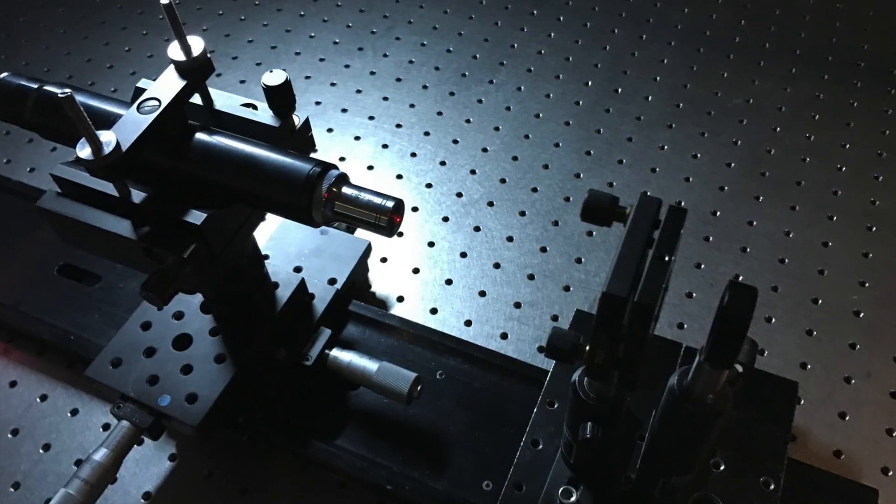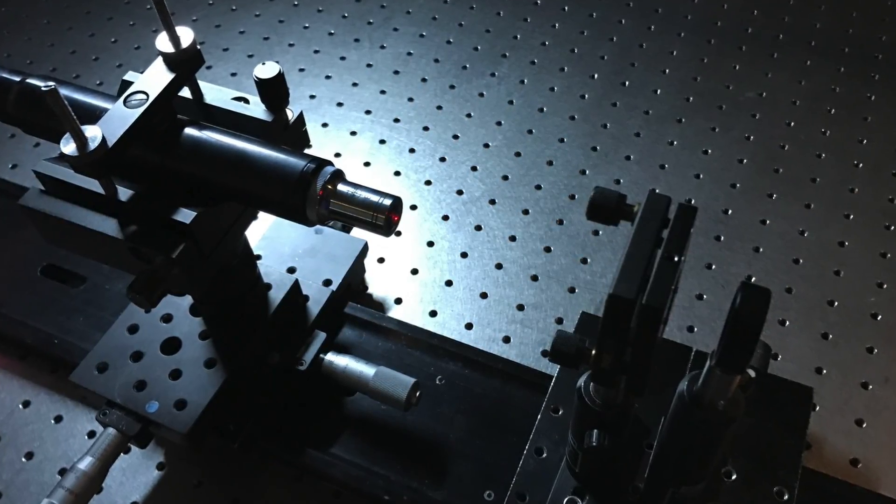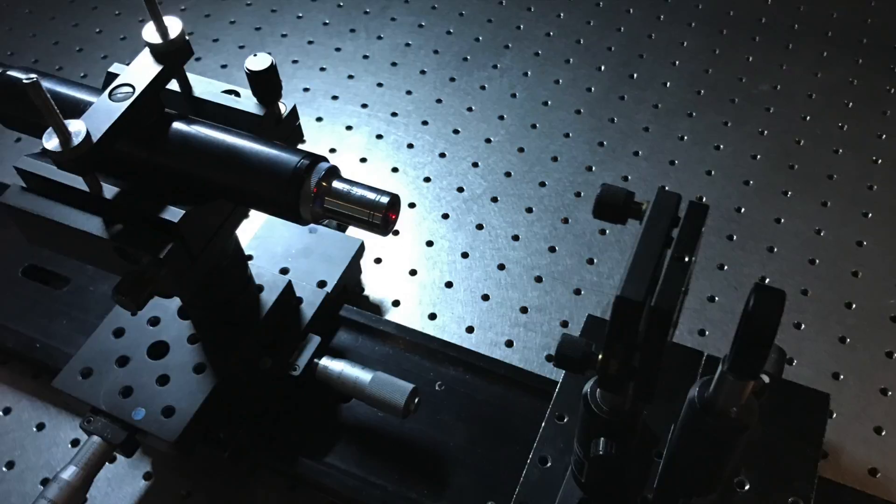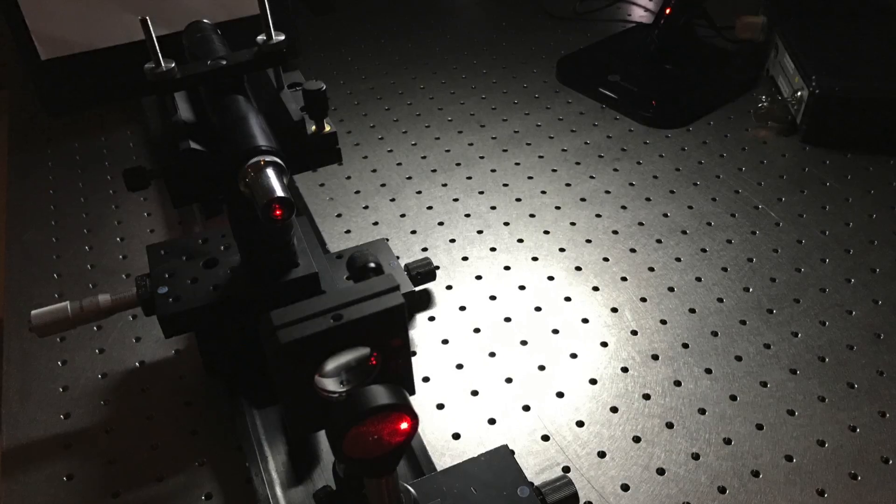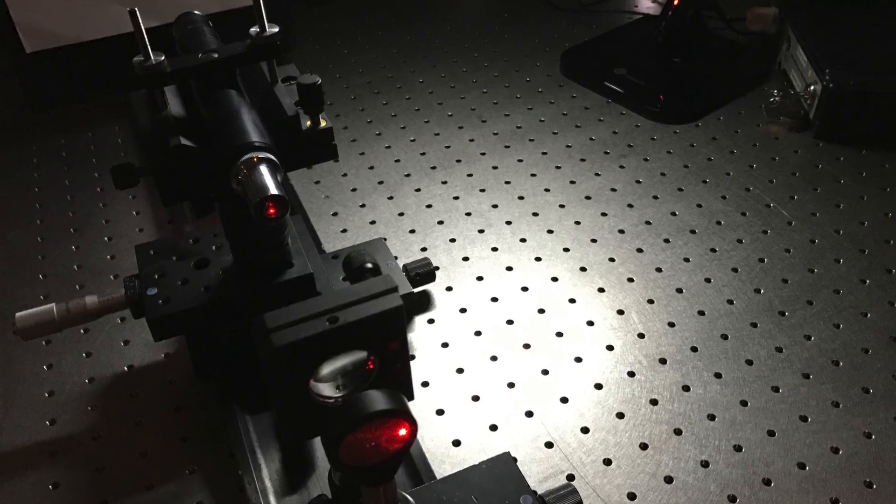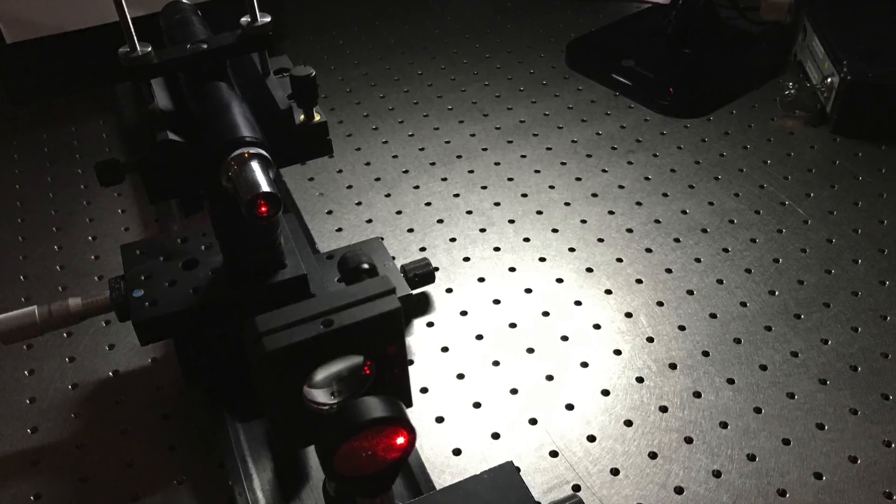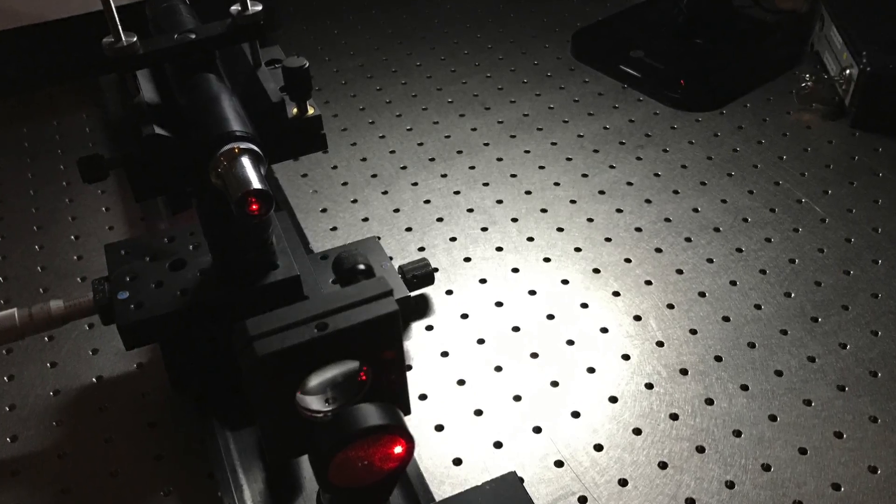This error in measurement could be caused by the microscope objective used to measure the amount of spherical aberration. Since the microscope objective was used to image the marginal focal point, magnification caused by the microscope objective could have exaggerated the lens's already large amount of spherical aberration present.